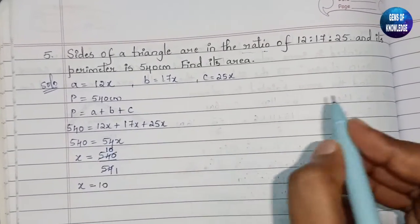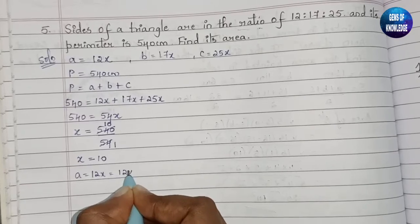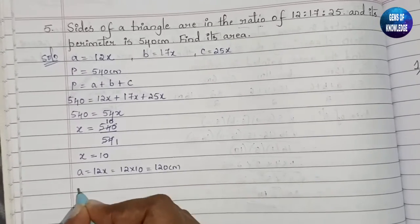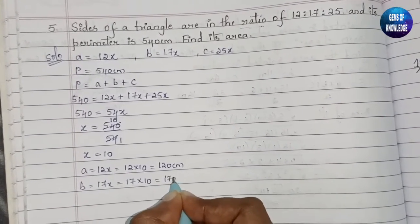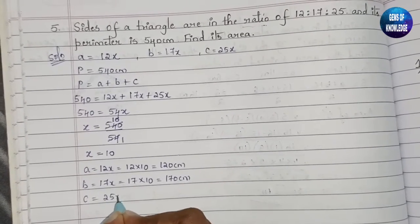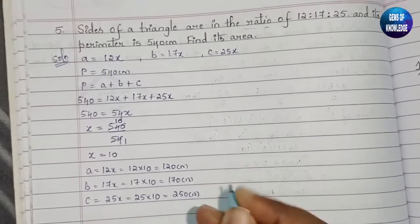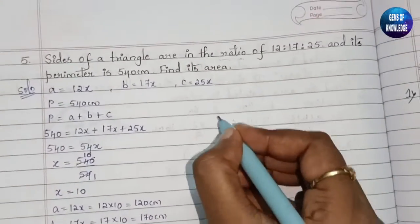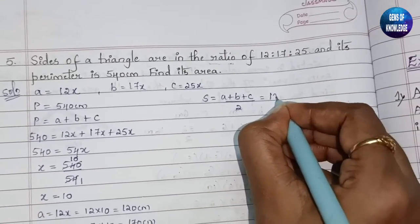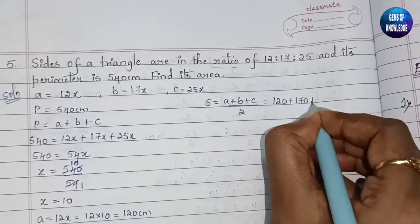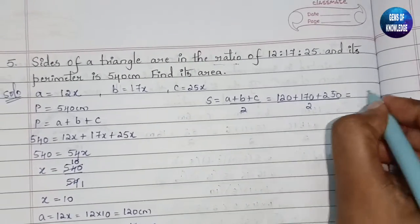Now we find a, b, and c. a equals 12x equals 12 × 10 equals 120 centimeter. b equals 17x equals 17 × 10 equals 170 centimeter. c equals 25x equals 25 × 10 equals 250 centimeter. Now substituting for s: s equals (120 + 170 + 250) divided by 2.